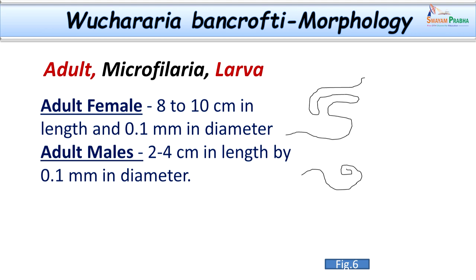Wuchereria bancrofti is the common species we come across. It exhibits itself in three different morphological forms: the adult forms, microfilaria, and the larval forms — L1, L2, and L3 larvae. The adult female of Wuchereria bancrofti measures about 8 to 10 centimeters and is located in the lymph nodes and afferent lymphatics, including the retroperitoneal or renal lymphatics. Adult males measure about 2 to 4 centimeters in length by 0.1 millimeter in diameter.